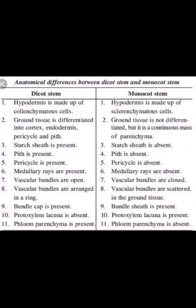Medullary rays — parenchyma cells connecting pith or medulla to cortex — are present in the dicot stem but absent in the monocot stem since there is no cortex or pith. In the dicot stem, vascular bundles are open, meaning a meristem (cambium) is always present between xylem and phloem. In monocot stem, vascular bundles are closed — no cambium is present between xylem and phloem; they are conjoint, collateral, but closed. Vascular bundles are arranged in a ring in the dicot stem while they are scattered in the ground tissue in the monocot stem.